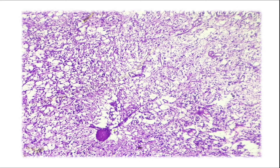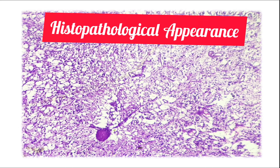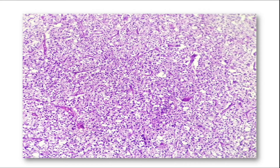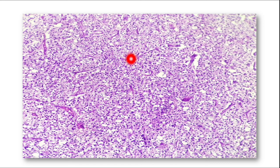In the biopsy image of oligodendroglioma, the cells are very small and monotonous with round small nuclei — not highly pleomorphic. In this 10x view, the tumor cells are separated by a thin network of blood vessels forming the chicken wire appearance.